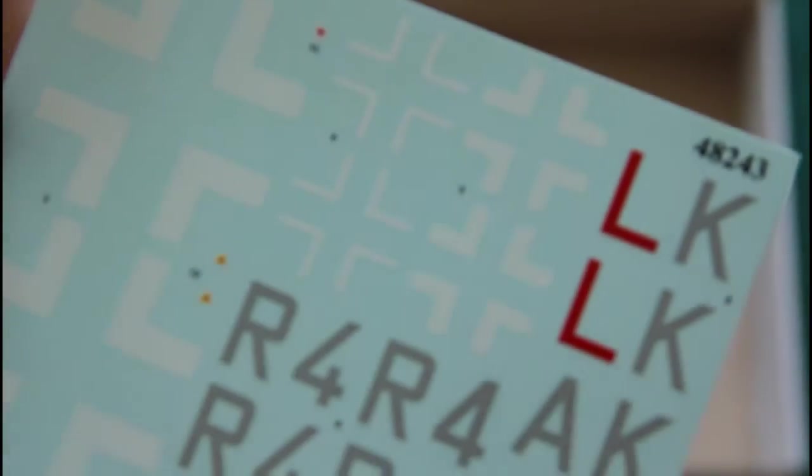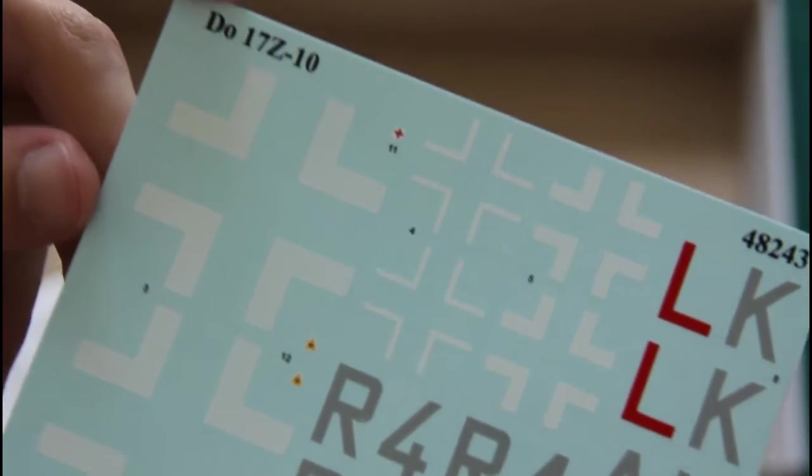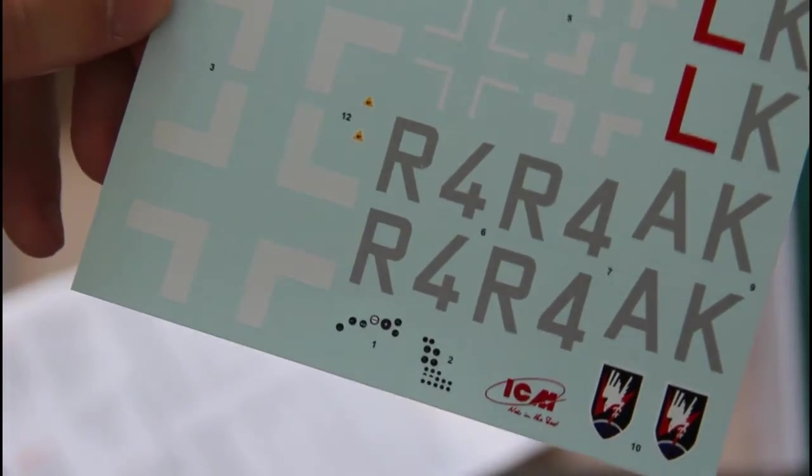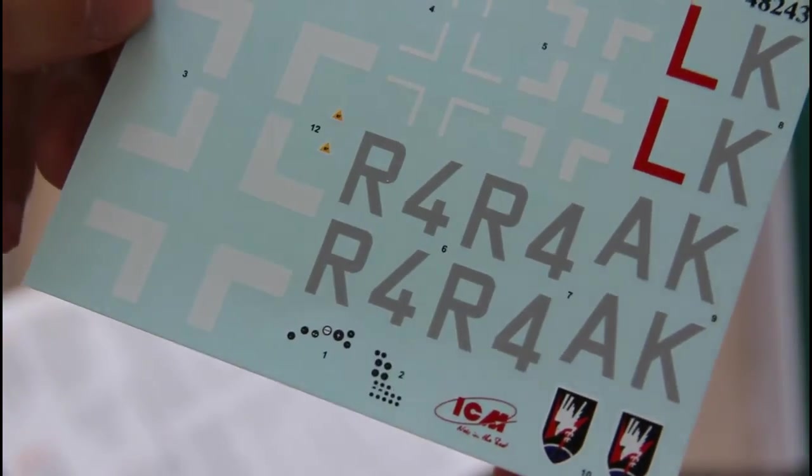On the bottom of the box we have the assembly manual with decal sheet inside. Decals are printed in more or less nice quality. We have these symbols and also decals for the dashboards. Nevertheless, it's quite surprising that this model is 1/48 scale but still we don't have stencils included.